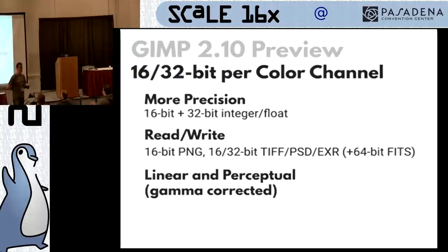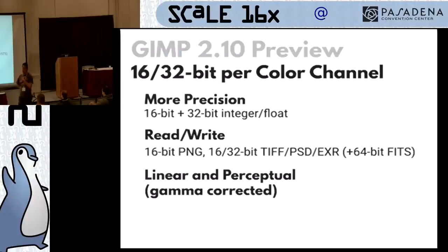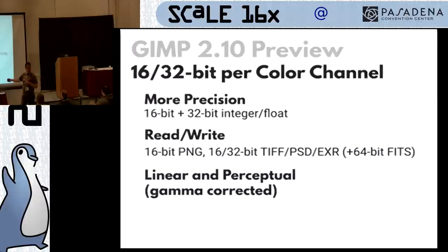We do high-bit depth color — 16-bit, 32-bit, and actually 64-bit FITS files. That's an astronomy thing the NASA JPL folks needed. So we do 16 and 32-bit integer and float for images. The internal pipeline is 16-bit float. We can read and write 16-bit PNGs, 16 and 32-bit TIFFs, Photoshop PSD files, and EXR extended range files for HDR imaging. We have full linear and perceptual tone response curves. Linear is the one that's right — anyone see that video about why color mixing is wrong in digital art? That thing has been fixed in GIMP 2.9 for a while.